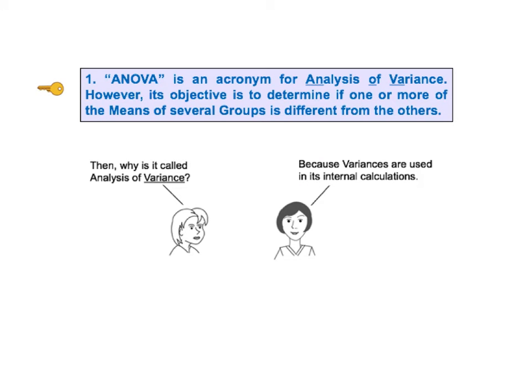Now let's begin our detailed explanation of each KTU. KTU number one says ANOVA is an acronym for Analysis of Variance. However, its objective is to determine if one or more of the means of several groups is different from the others to a statistically significant degree.